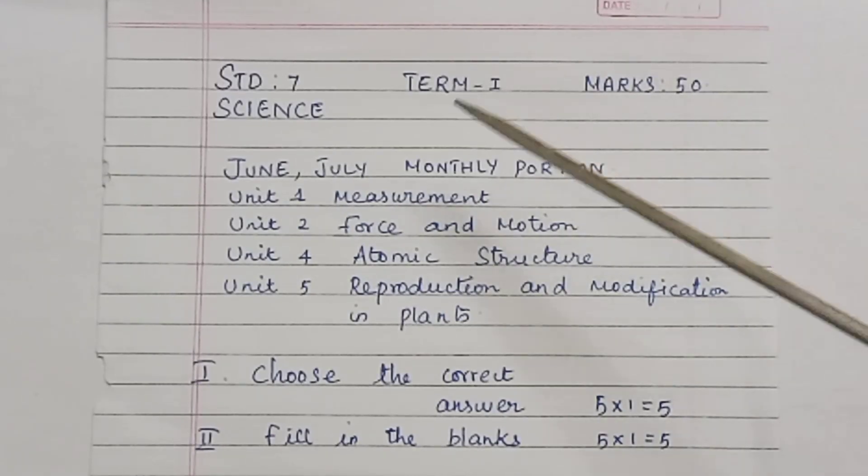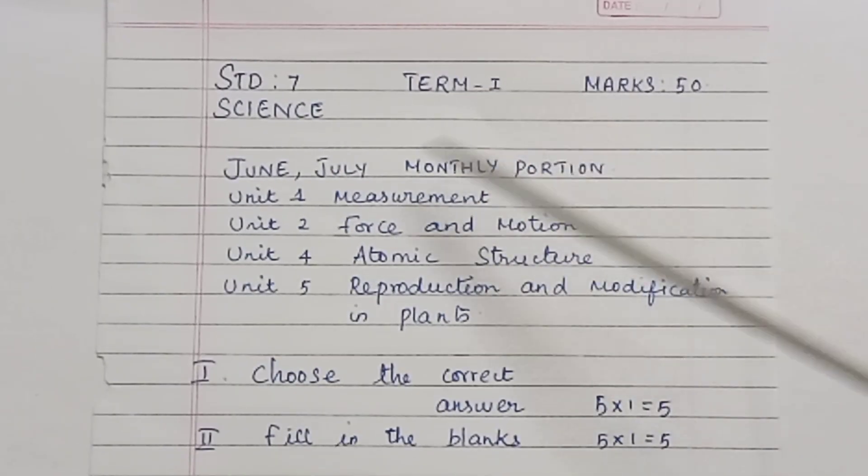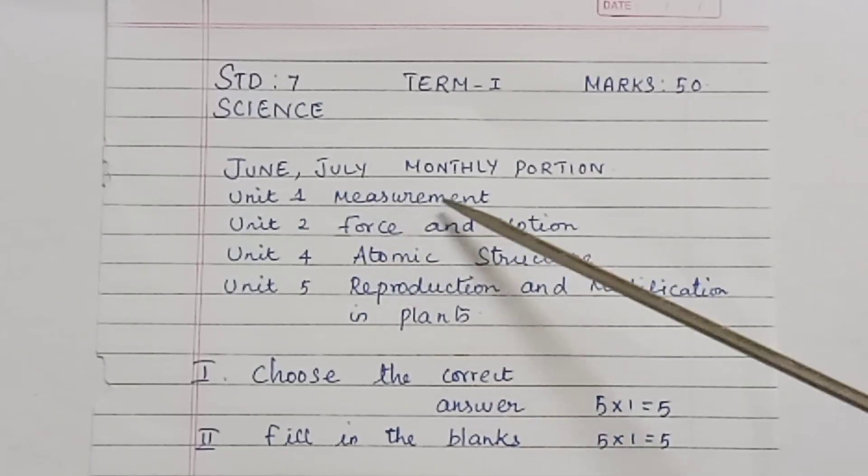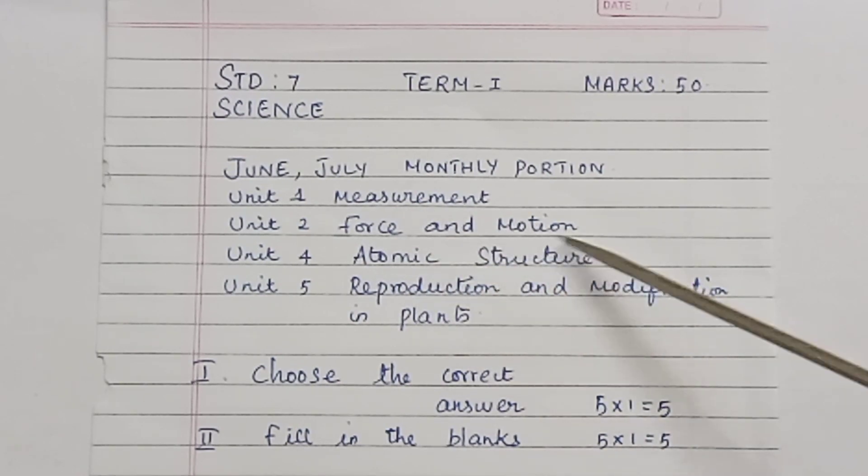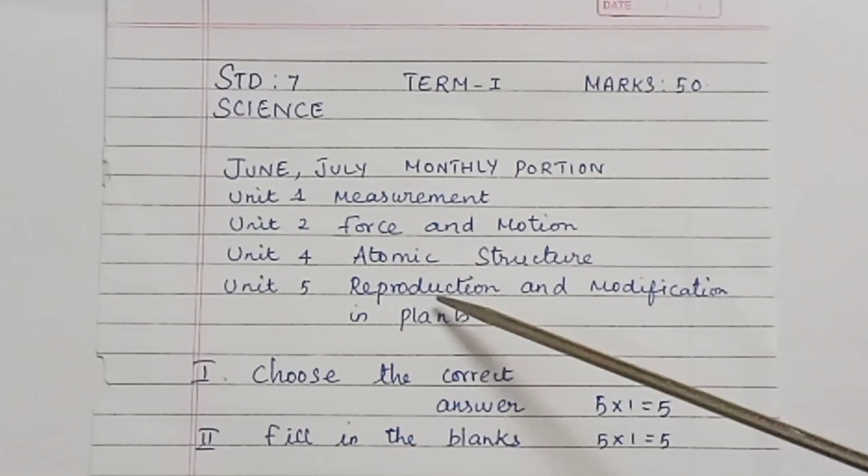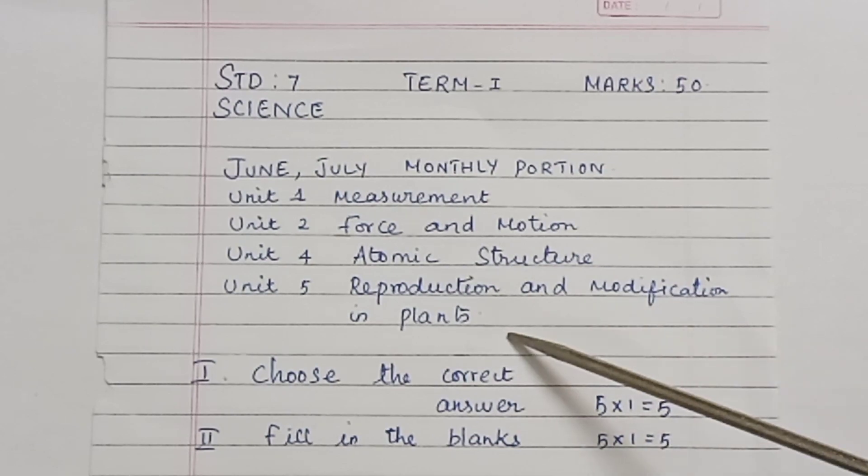If you want to see the Standard 7 Term 1 June-July monthly portion, this is the exam model. Unit 1: Measurement, Unit 2: Force and Motion, Unit 4: Atomic Structure, Unit 5: Reproduction and Modification in Plants.